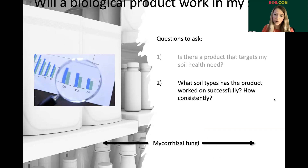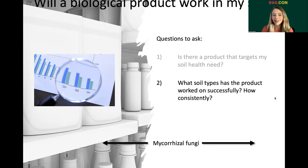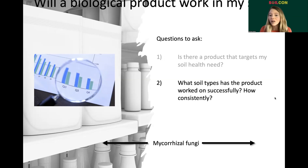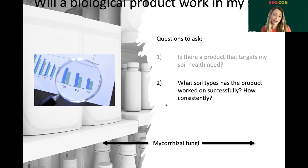What soil types has the product worked on successfully, and how consistently? These products don't show you all their data and you might have to ask to see more. I've never seen a bar graph with error bars from them. Ask: what soil types was this successful on, what percentage of the time, and what does the full picture look like? Remember that microorganisms behave differently in different contexts — it might not work the same way in your field as one nearby.